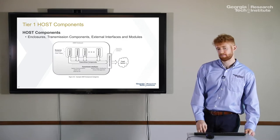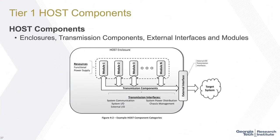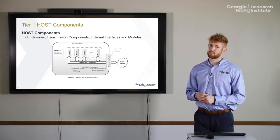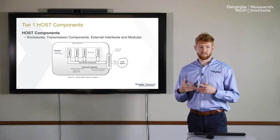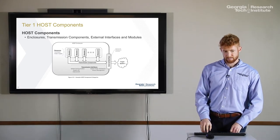We also have the host components, and these all fit together. These are the interfaces that need to be defined within the Tier 2 standard. You need to define the enclosure — how do the modules fit into the enclosure and what does the enclosure look like? The transmission components define how things are connected together — is it wires, is it a PCB? The external interface may define how signals come in and out of your system. And the modules: what do those look like, and what are their interfaces to the backplane?